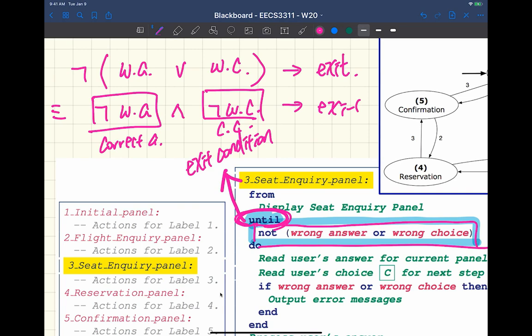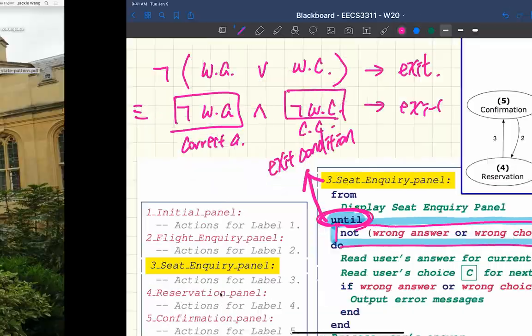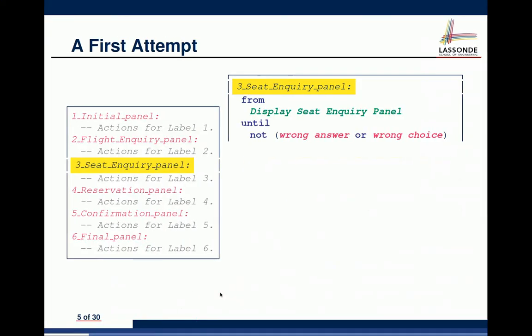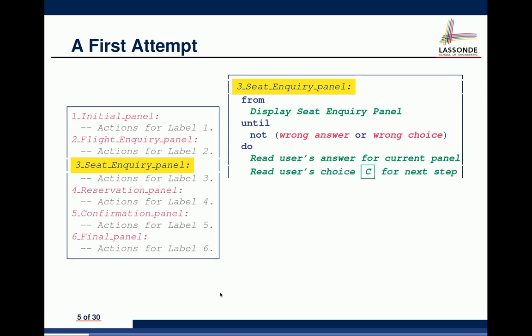We're going to argue formally later whether, given an arbitrary condition for your 'until', your loop can terminate — that's something we'll prove formally later in the course. After both answer and choice are correct, you process their answer, then do a case statement: depending on their choice, if they want to go to state two, you go to state two; if state three, you go to state three. This corresponds to the transitions in the diagram.